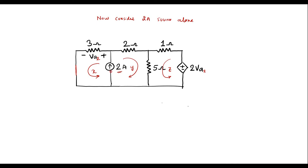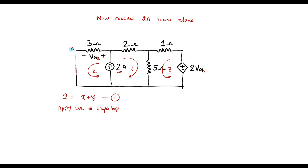There is a current source between two loops, so we analyze it first: 2 equals X plus Y — let this be equation 1. We remove the current source and treat the remaining path as a super loop (A-B-C-D-E-F). Now apply KVL to this super loop.